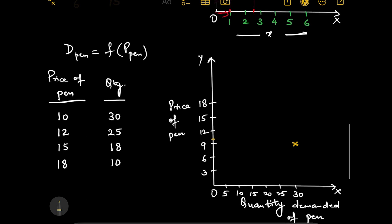Next is if price of pen goes to 12, I am only willing to buy 25 pens. So, if price is 12, I will buy somewhere here. If price is 15, I am willing to buy 18 pens.